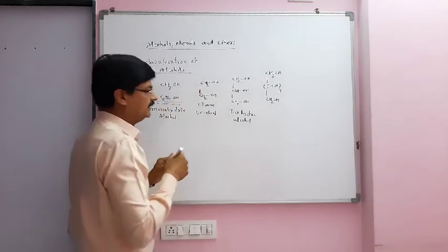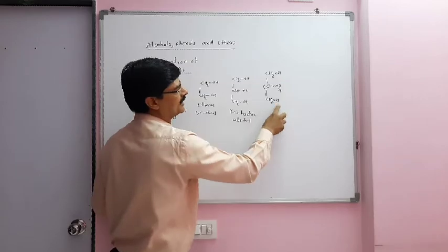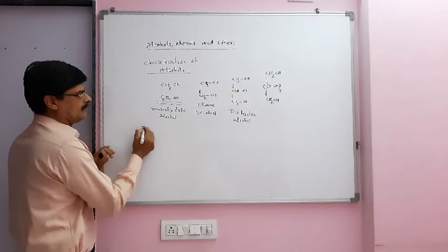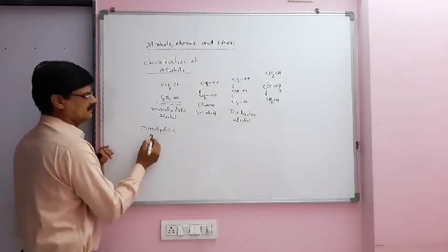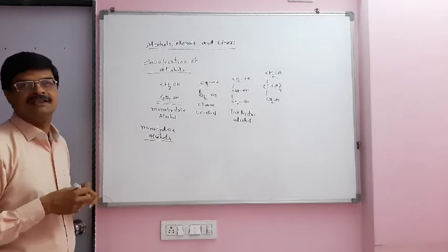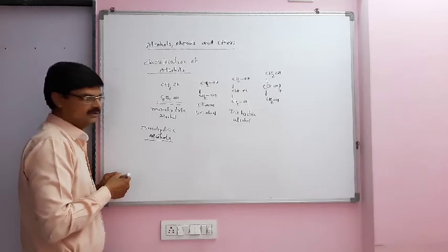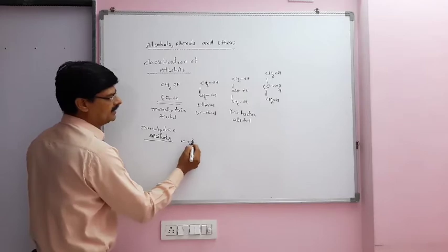One more alcohol says sorbitol. We can see that in sorbitol total number of OH groups are six hexahydric alcohol.